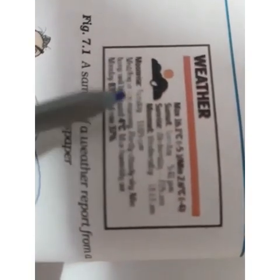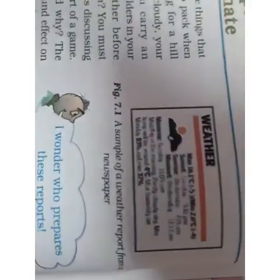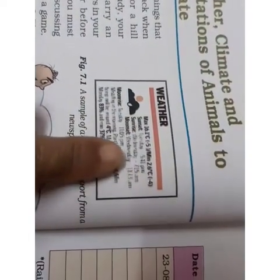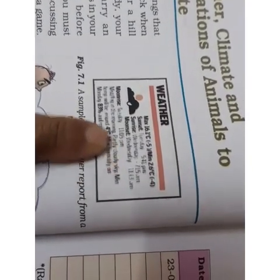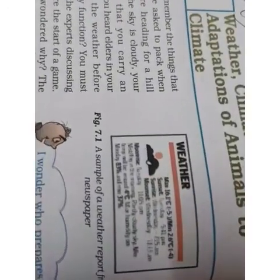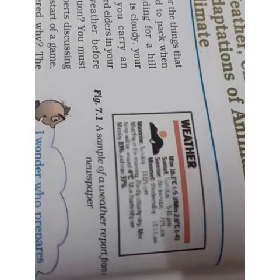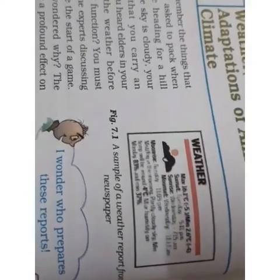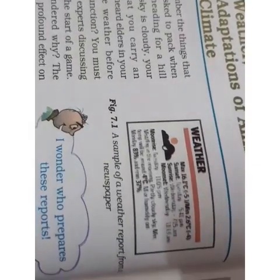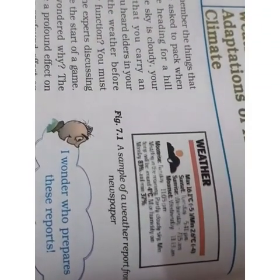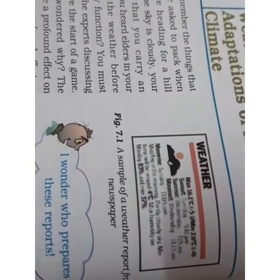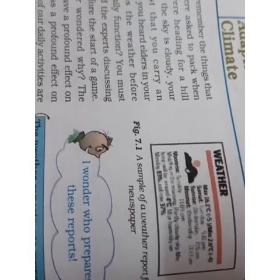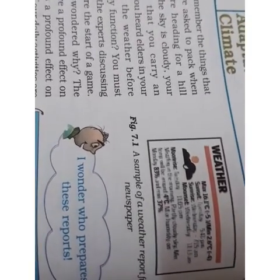Let us go through this report. You can see that the maximum temperature and minimum temperature are written, then sunrise and sunset timings. Humidity is also written — humidity is the amount of moisture or water content present in the air, and it is measured as a percentage. If there is going to be any rainfall or cloudy weather, that is also mentioned. So minimum and maximum temperatures, sunrise, sunset, humidity, and the rainfall prediction are all included — both for the past 24 hours and for the coming day.